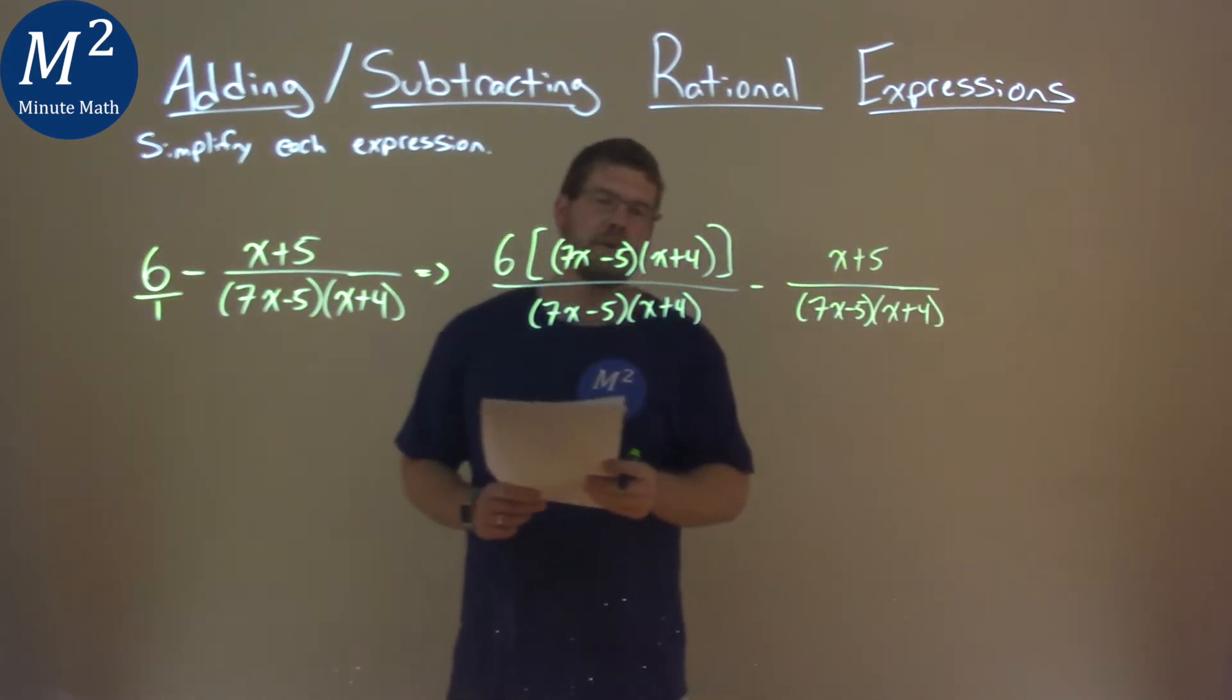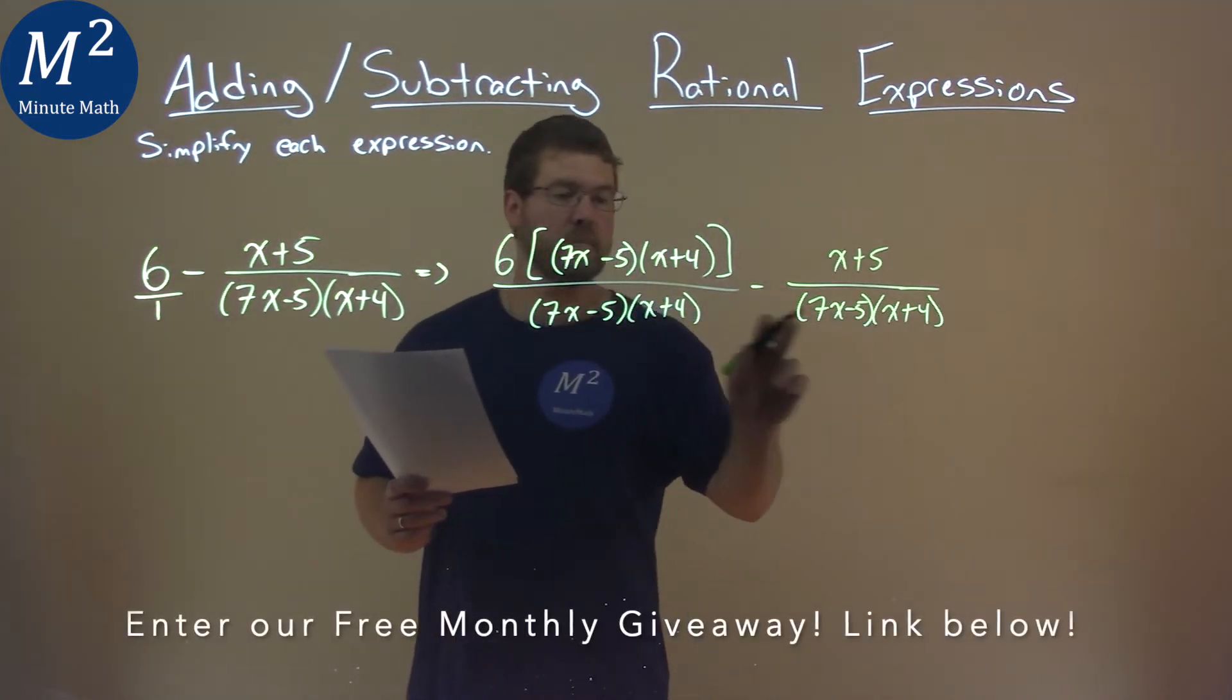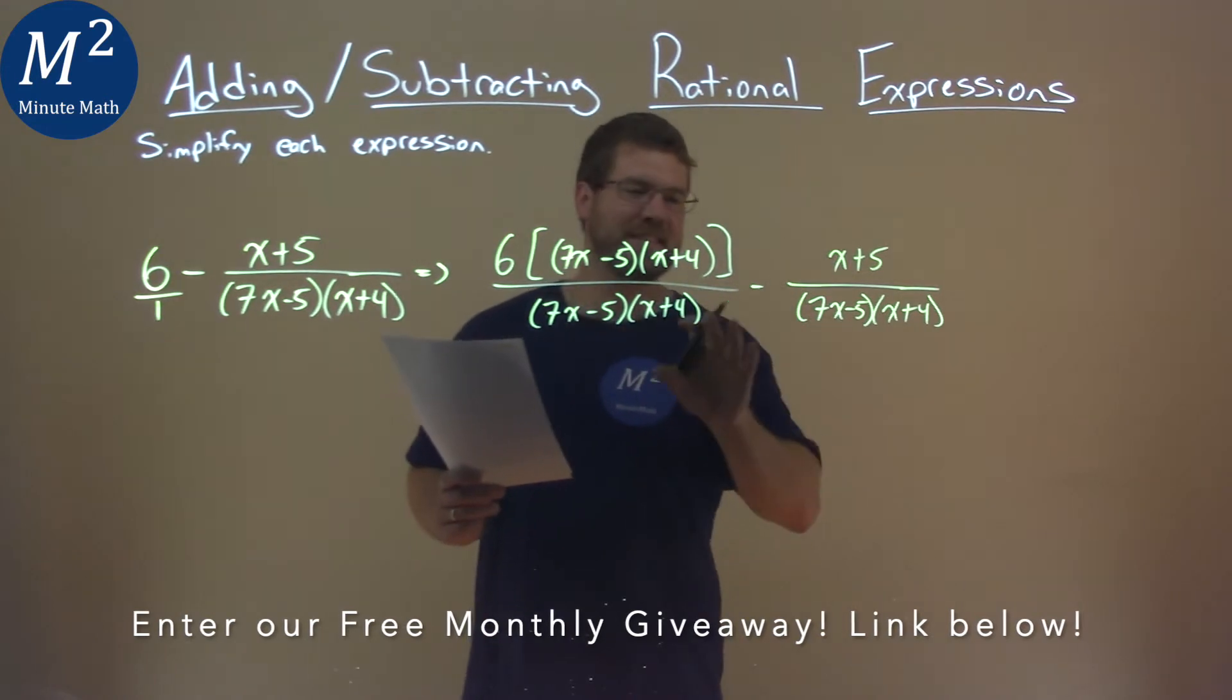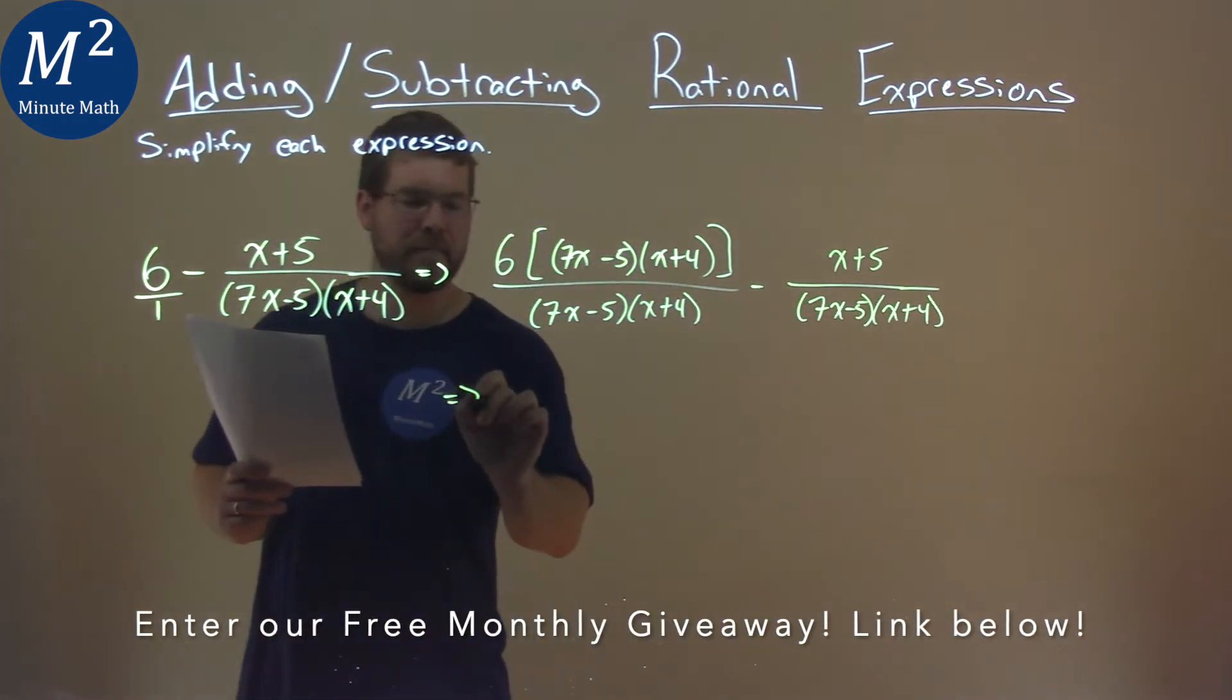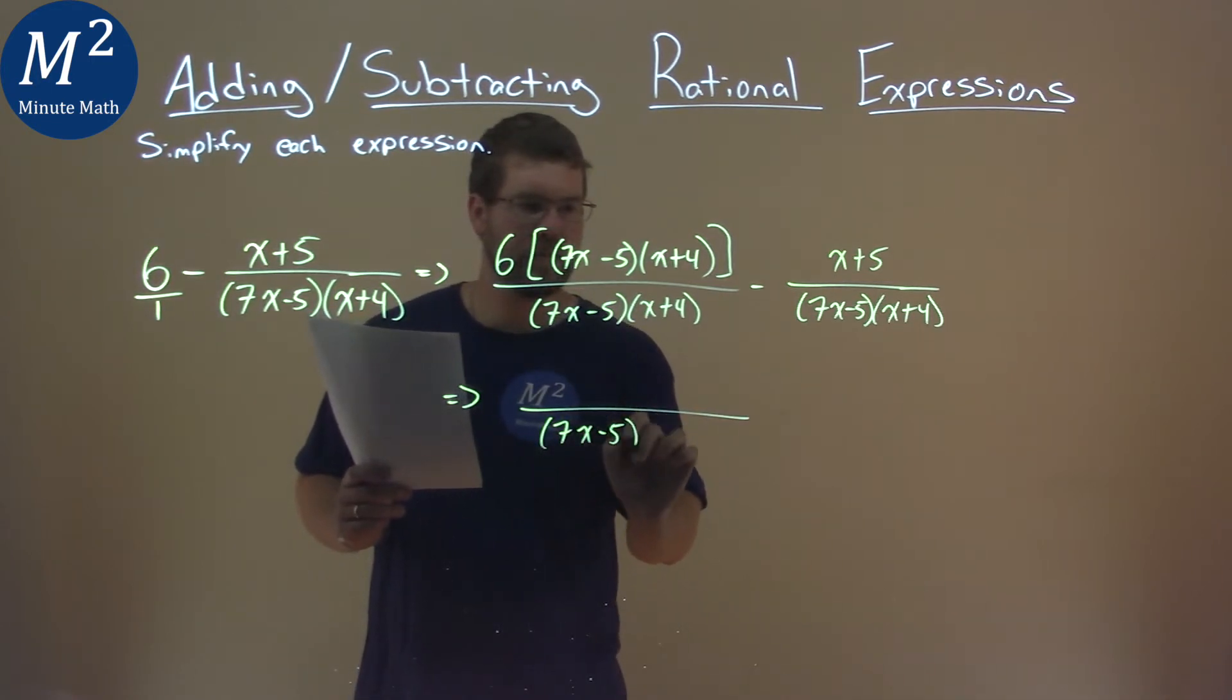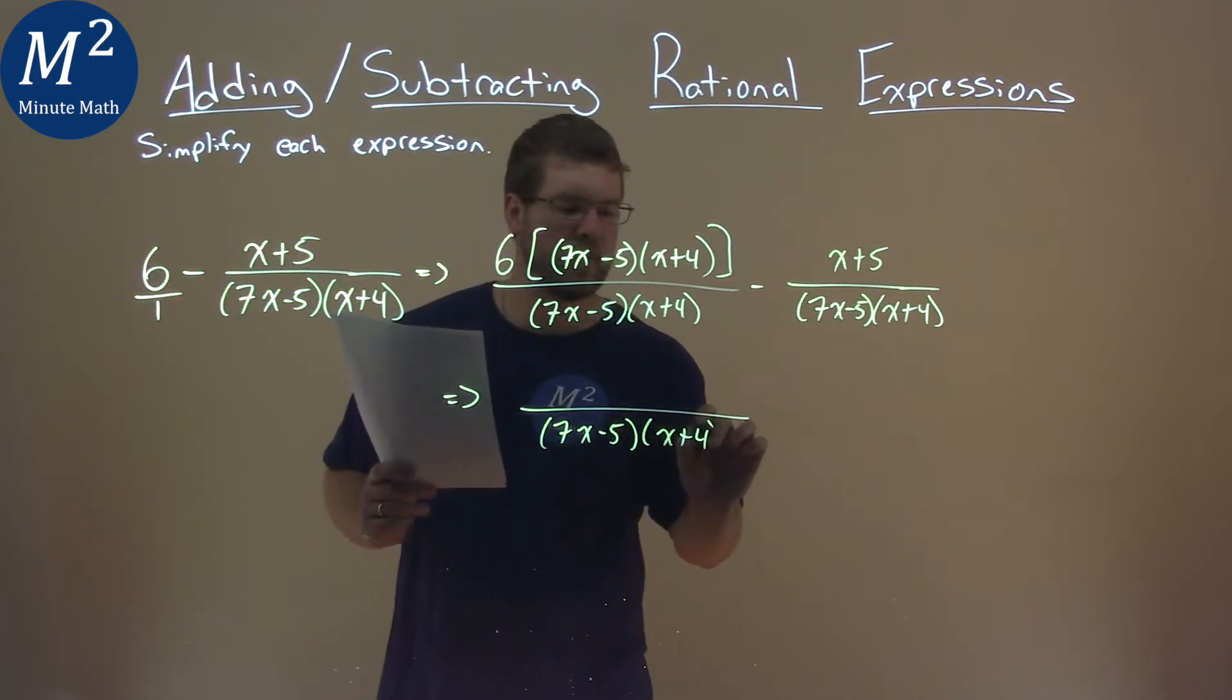So now what we have to do is simplify this, combine the like terms. Same denominator, the two parts here, so we can combine that. In doing so, we'll also simplify some of the numerator. So 7x minus 5 here and x plus 4, all together is one fraction.